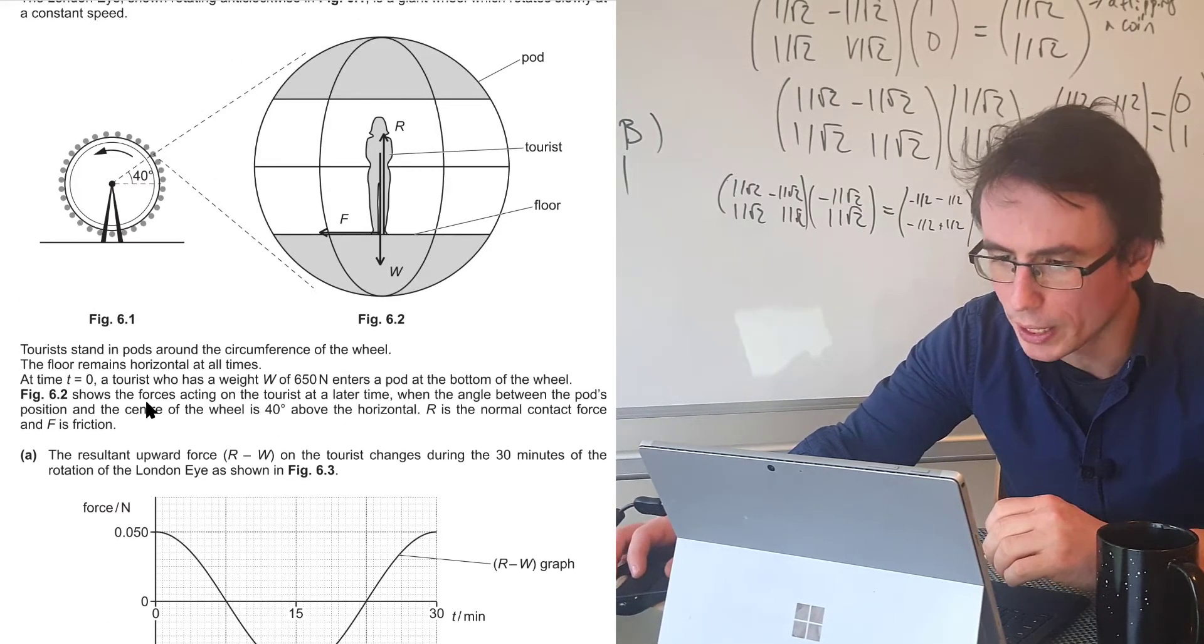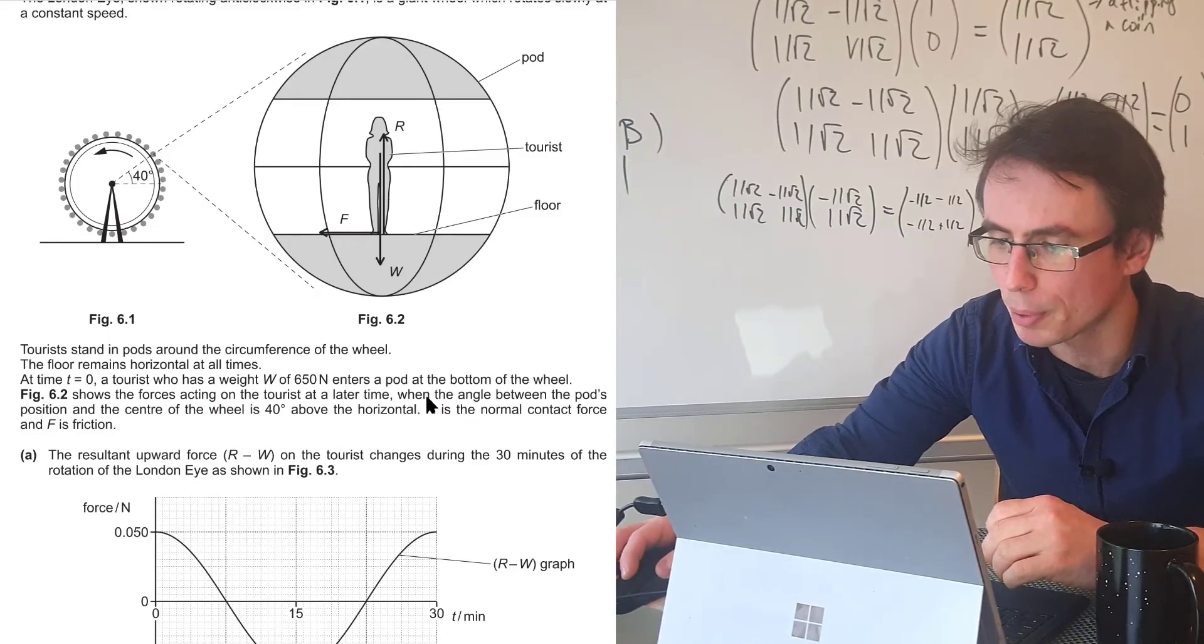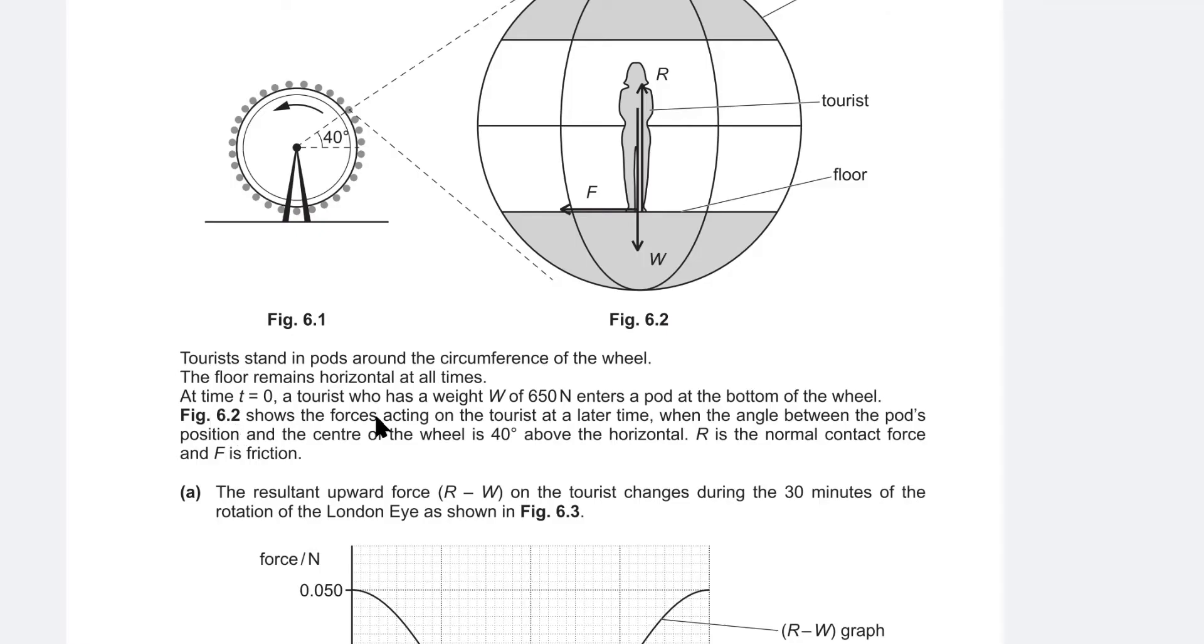So at time t equals zero, a tourist who has a weight of 650 newtons enters the pod at the bottom of the wheel. Figure 6.2, which is this one here, shows the forces acting on the tourist at a later time when the angle between the pod and the position of the center is at 40 degrees above the horizontal.